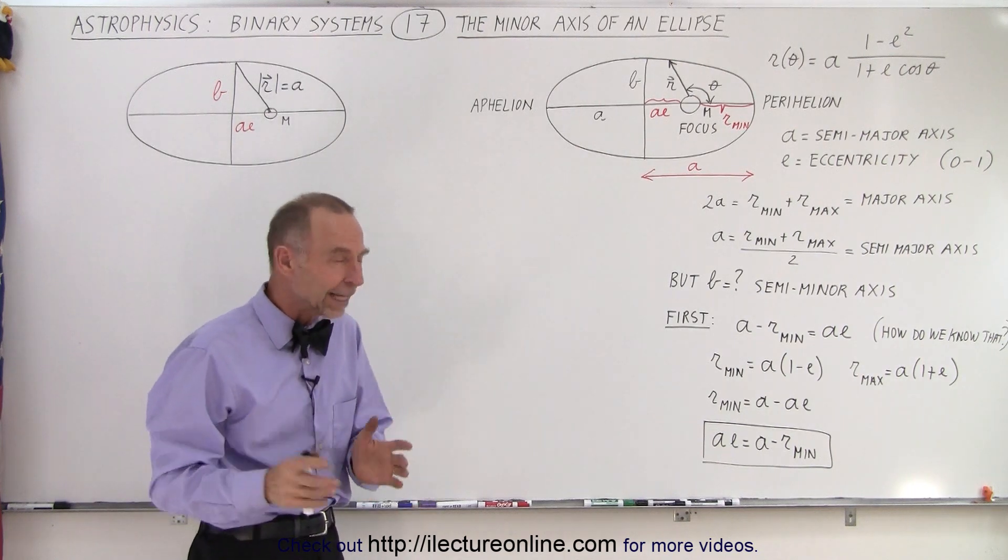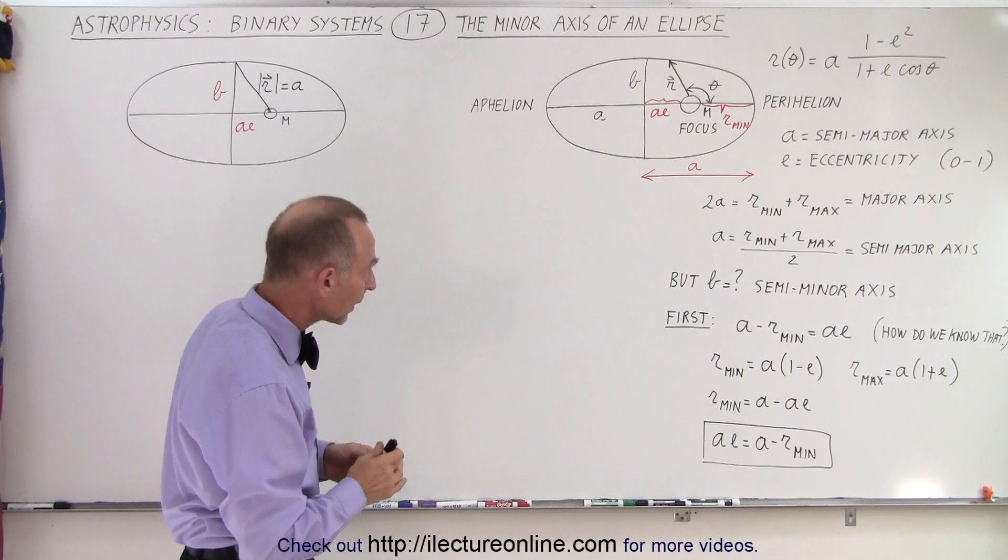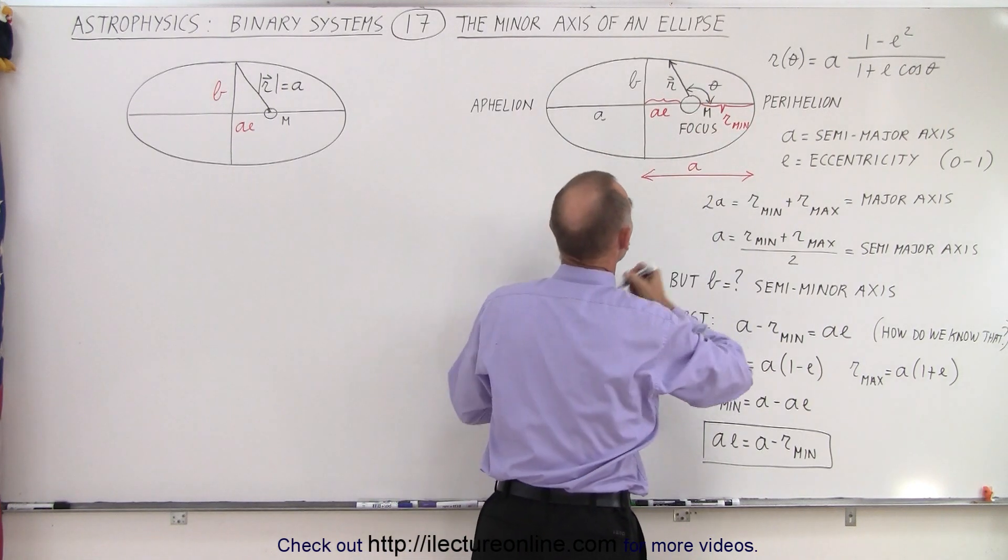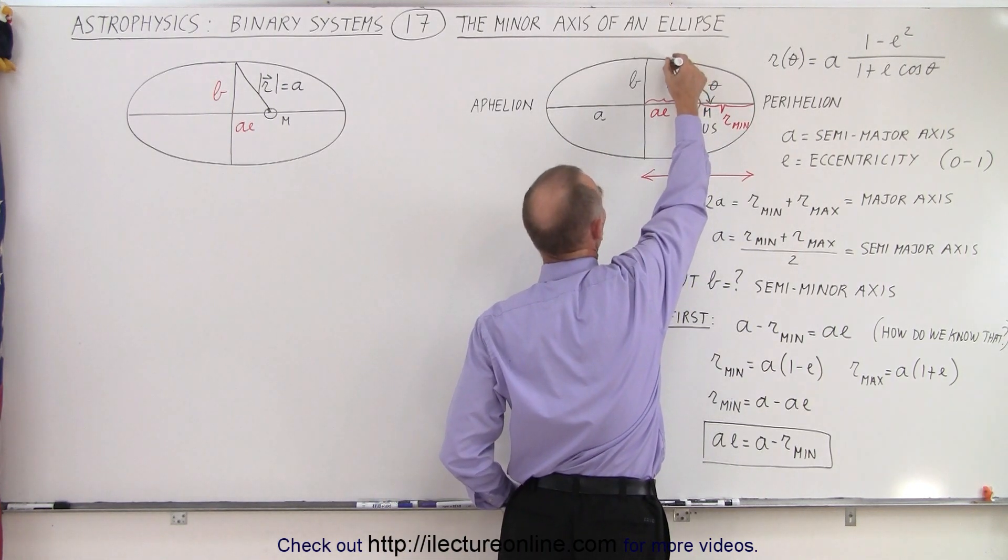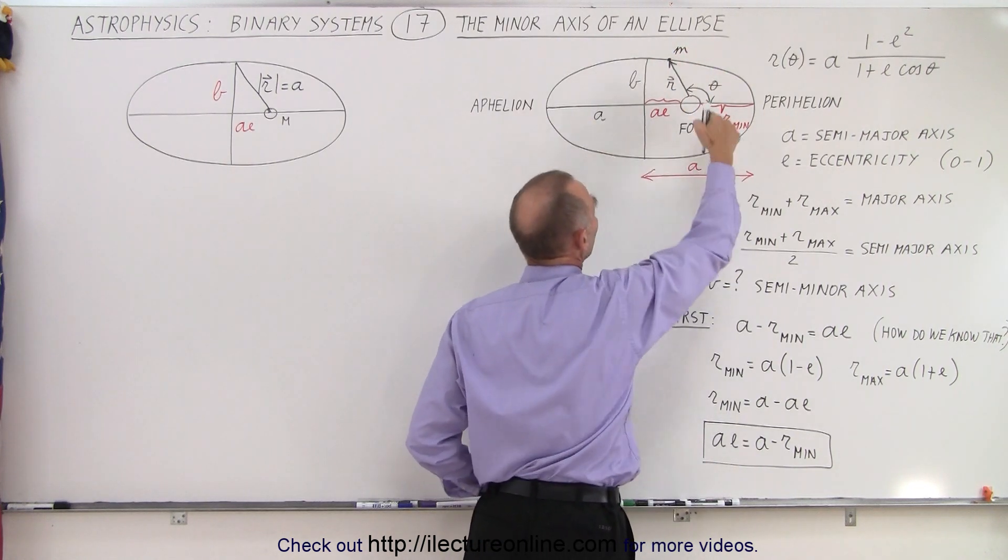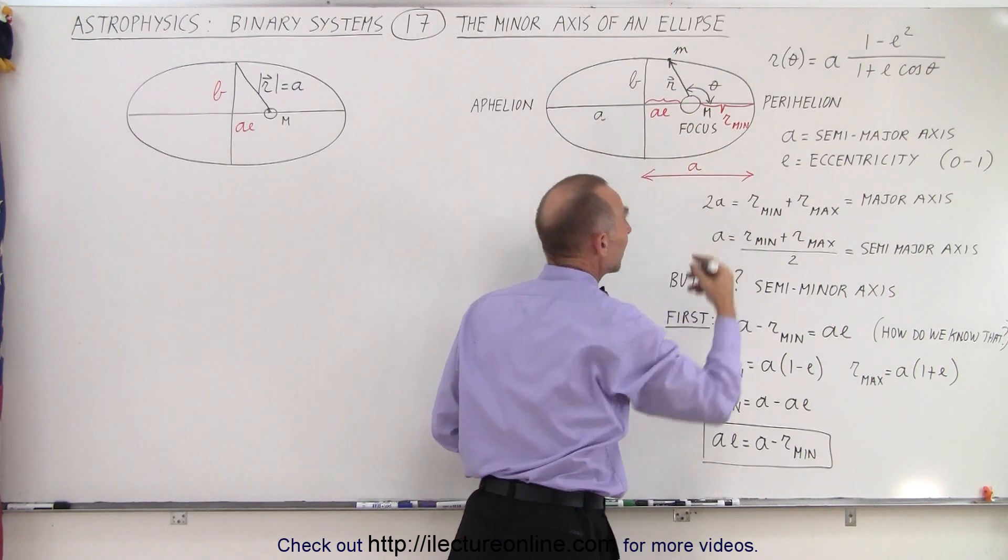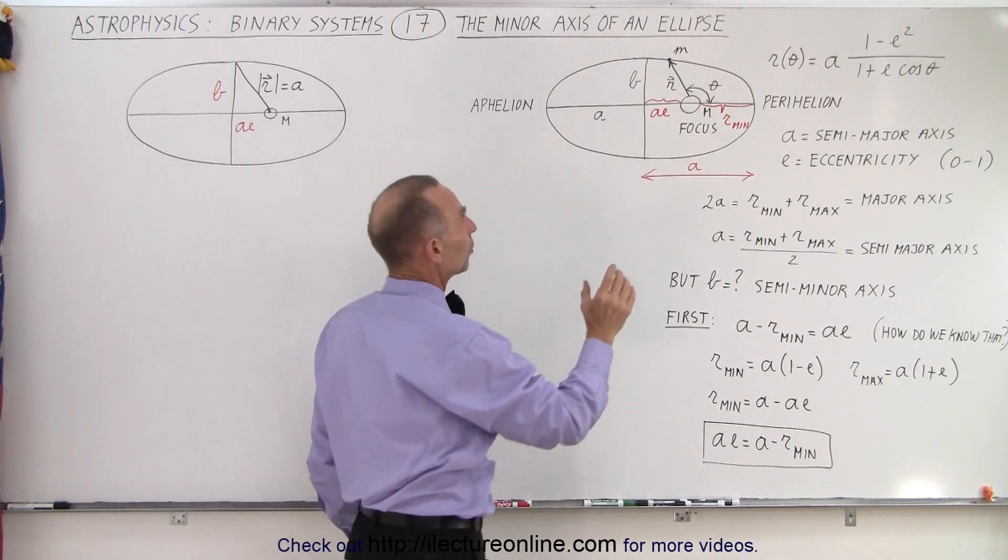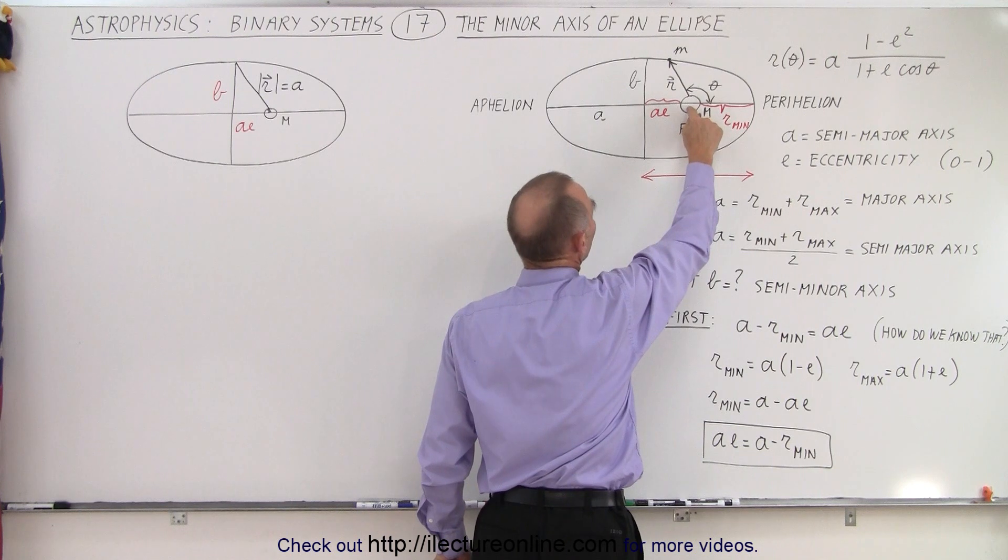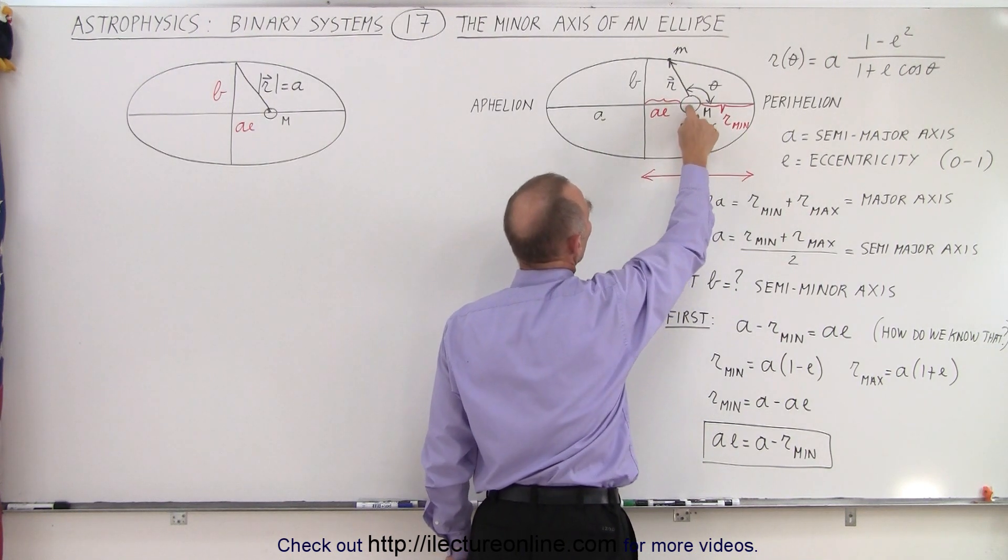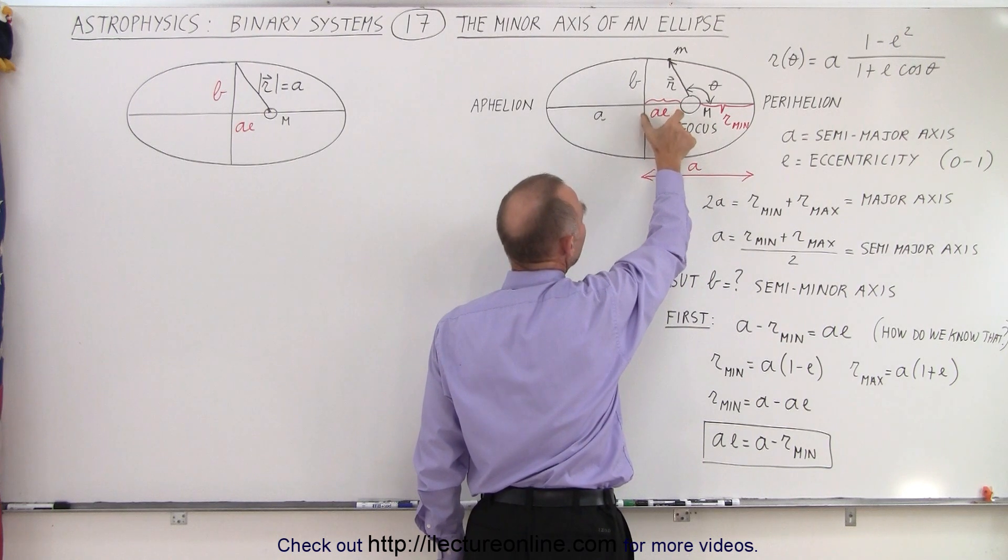So how do we calculate the value of that? To remind ourselves, the object about which the planet, for example, let's assume that this is a small planet with small mass m going around the sun with big mass M—and of course big M is much, much bigger than small m—notice that the sun would then be located at one of the foci of the ellipse. Now the distance from the foci to the center of the ellipse is AE.